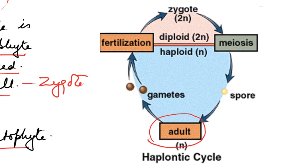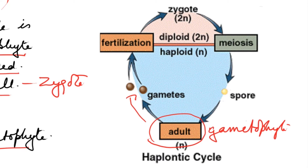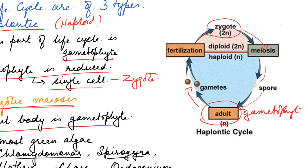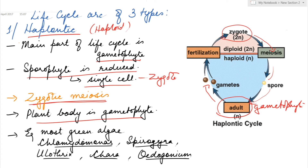In the haplontic life cycle, the plant body refers to the gametophyte. The life cycle starts with the gametophyte, which produces gametes that undergo fertilization to form the zygote. The zygote undergoes meiosis to form the spores, which divide to form the gametophyte. The haplontic life cycle can be seen in most green algae like Chlamydomonas, Spirogyra, Ulothrix, Cladophora, and Oedogonium.